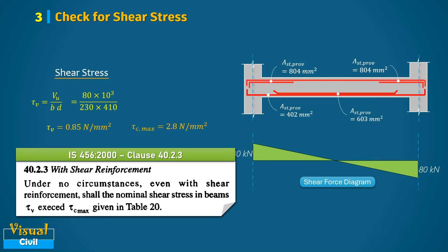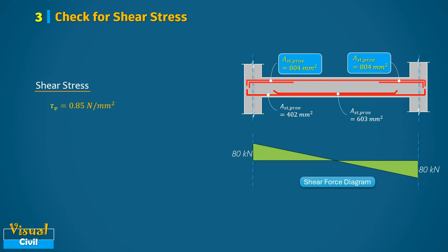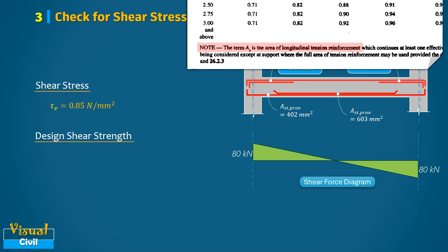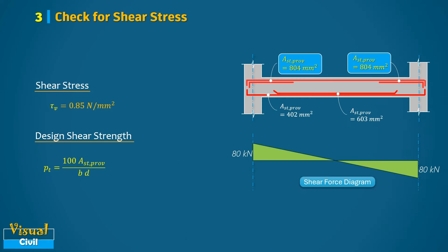According to Clause 40.2.3 of IS 456, even with shear reinforcement, the nominal shear stress tau_v should not exceed tau_c,max under any circumstances. Now let us compare the shear stress with the design shear strength of the beam, determined from Table 19 of IS 456 based on the percentage area of longitudinal tension steel. Near the support, where the shear force is maximum, tension steel is placed at the top totaling 804 mm².